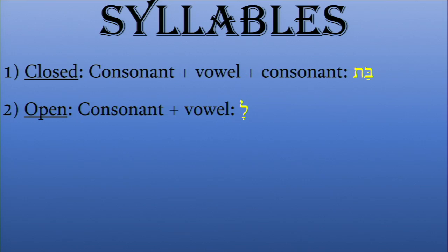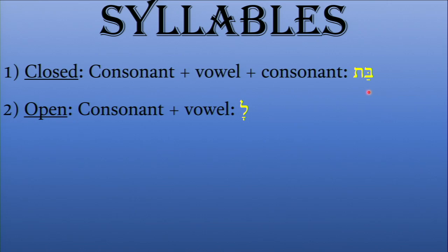A closed syllable consists of a consonant, then a vowel, then a consonant — it opens with a consonant and closes with a consonant. For example, the word 'bat,' which means daughter: it begins with a Bet, has a Patah as the vowel, and then has a consonant Tav — and that's where the syllable closes.